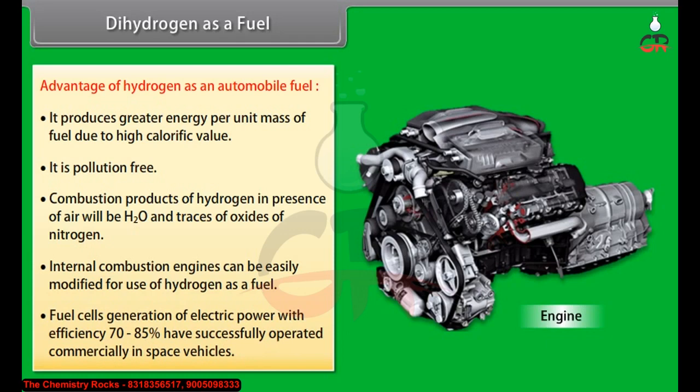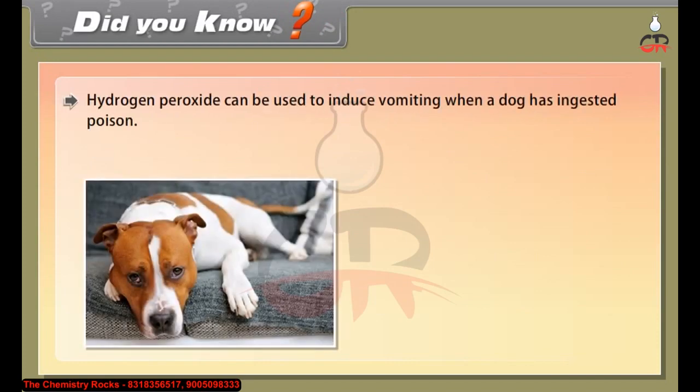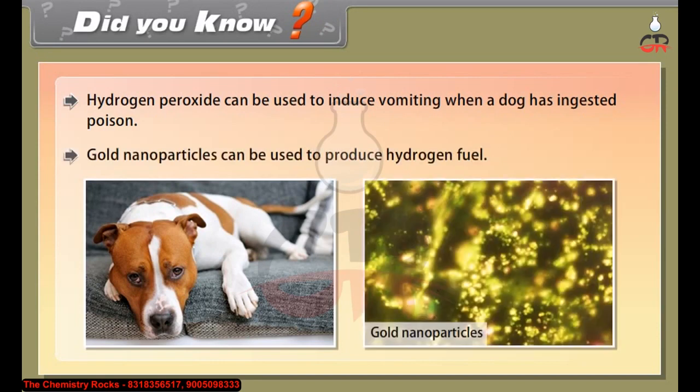Fuel cells: generation of electric power with efficiency 70-85% have successfully operated commercially in space vehicles. Did you know? Hydrogen peroxide can be used to induce vomiting when a dog has ingested poison. Gold nanoparticles can be used to produce hydrogen fuel.